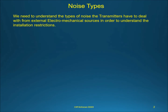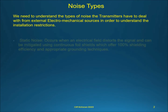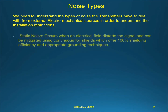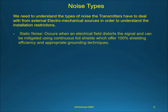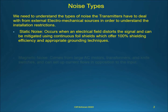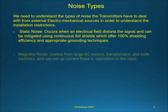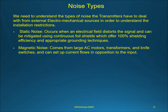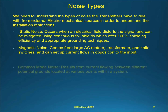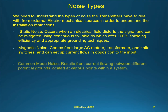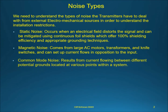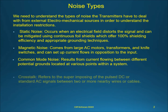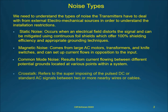Static noise occurs when an electrical field distorts the signal and can be mitigated using continuous foil shields which offer 100% shielding efficiency and appropriate grounding techniques. Magnetic noise comes from large AC motors, transformers, and knife switches, and can set up current flows in opposition to the input. Common mode noise results from current flowing between different potential grounds located at various points within a system. Cross-talk refers to the superimposing of the pulsed DC or standard AC signals between two or more nearby wires or cables.